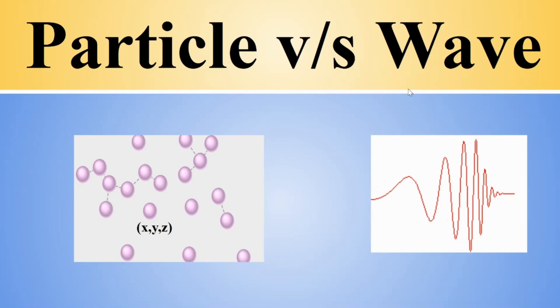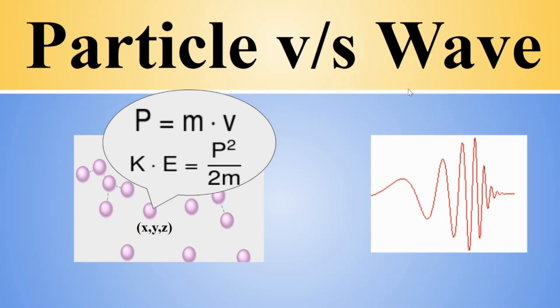When you are talking about particles, the more convenient quantities to describe a particle are momentum and energy related. For example, in non-relativistic mechanics by this energy-momentum-potential relation. And for waves, it is more convenient to talk about the wavelength of the wave and the frequency of the wave.